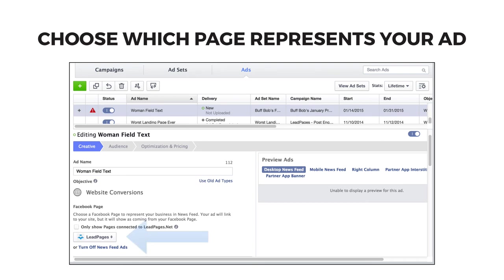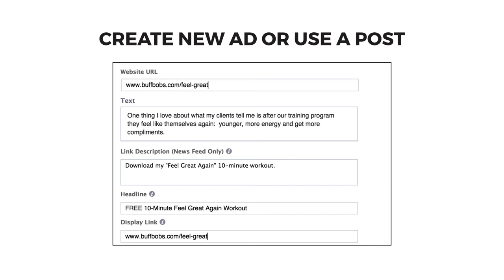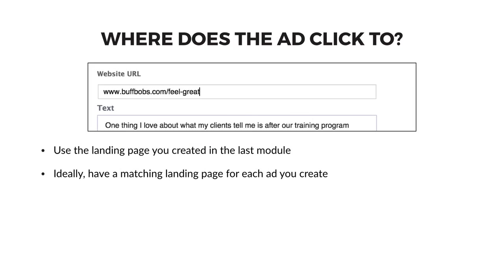First, choose which page represents your ad when it shows up in the newsfeed. Since you are using the Power Editor from within the Business Manager, you'll have access to all of the pages you're an admin for. Next, choose to create a new post that won't appear on your business page or use one of your existing posts. If you've heard the term 'dark post' before, you're now seeing this in action — a post that's made into an ad but doesn't show up in the regular business page's newsfeed. Next, enter the destination URL of your ad — this is where users will go when they click on your ad. This should be that high-converting landing page you created in the last module, and ideally your landing page should match the text, image, and post content of the ad you're using.